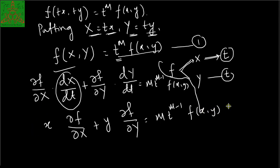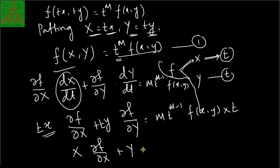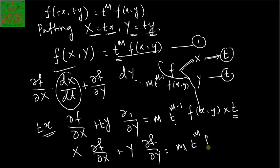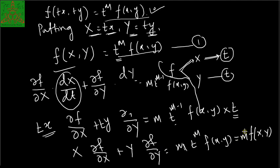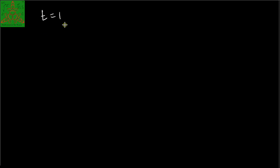Multiplying both sides by t gives: X·(∂f/∂X) + Y·(∂f/∂Y) = m·t^m·f(x, y). But t^m·f(x, y) is nothing but m·f(X, Y). This equality is true for all t, so setting t = 1 gives us: x·(∂f/∂x) + y·(∂f/∂y) = m·f, which is what we wanted to prove.